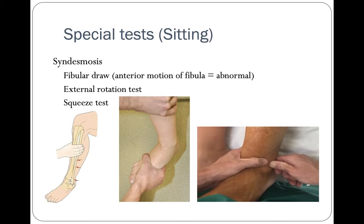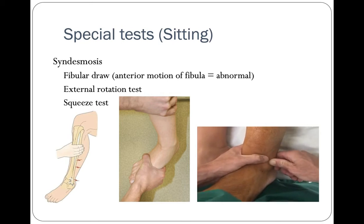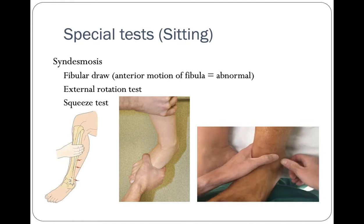Then test for the syndesmosis instability. If there's been an external rotation injury, palpate over the syndesmosis, the gap between the tibia and the fibula. And then perform the fibular draw test illustrated on that video, and that's instability in the sagittal plane. Perform an external rotation test, holding the foot with one hand and the tibia with the other and externally rotating the ankle. If there is increased movement or pain, this could be positive. And then performing a squeeze test, squeezing the fibula against the tibia. If there is pain distally over the tibiofibular articulation, this may be indicative of a syndesmosis injury.